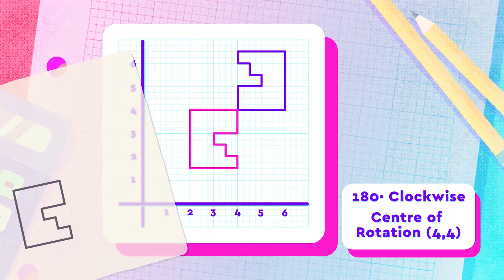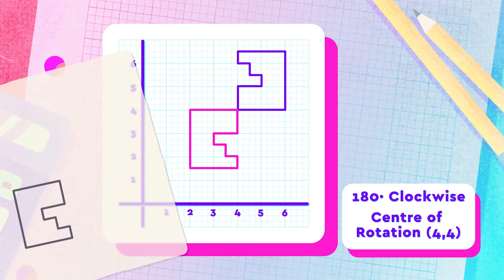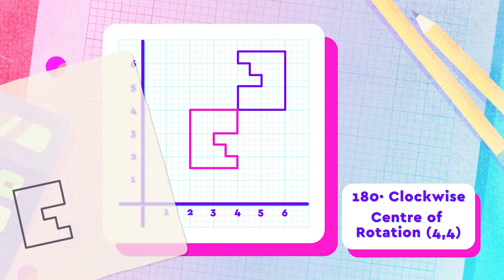The new position of the shape on the grid should be exactly where the question has asked you to draw the new shape.